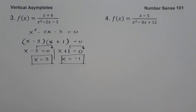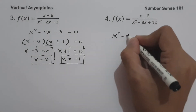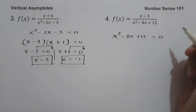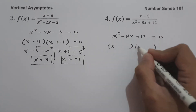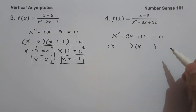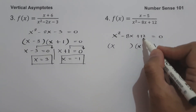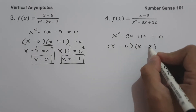On number 4, we have f of x equals x minus 5 all over x squared minus 8x plus 12. So let us equate x squared minus 8x plus 12 equal to 0. Let us factor this expression. The factors of x squared are x and x. What are the two numbers? If we multiply we can get 12, and if we add we can get negative 8. That is negative 6 and negative 2.